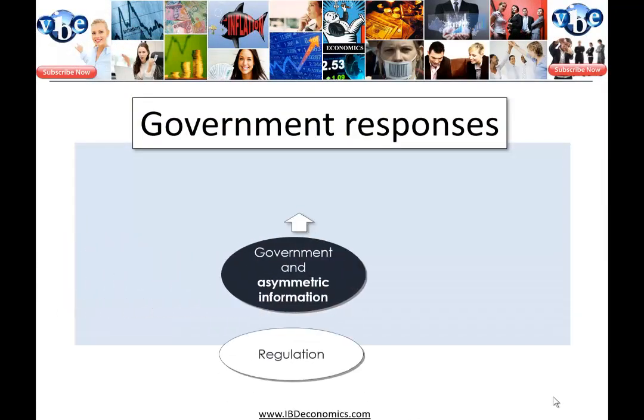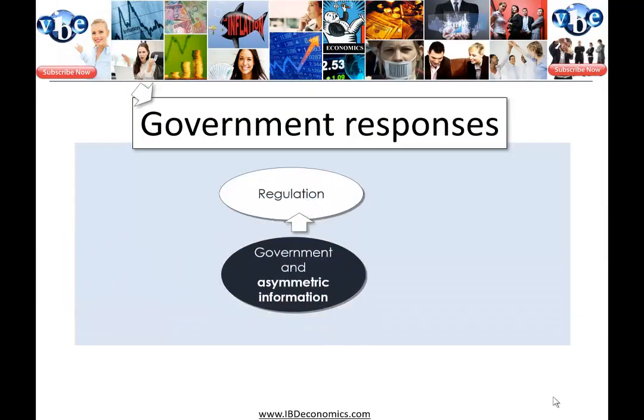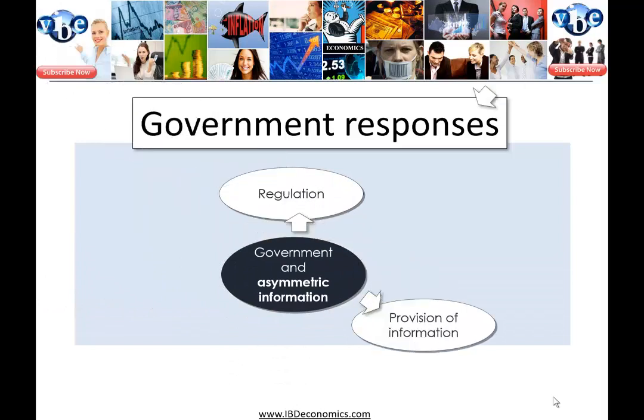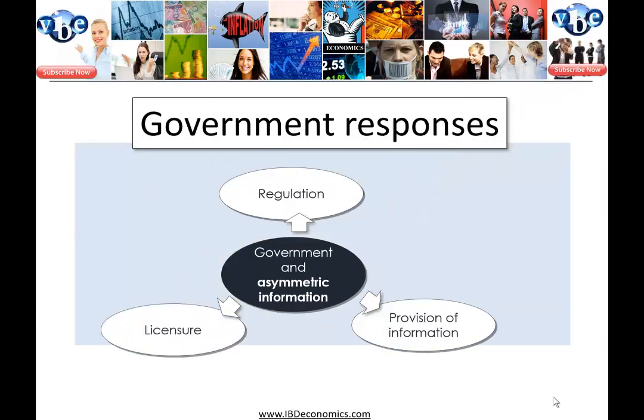What is the government's response to asymmetric information? Regulation, provision of information, and licensure are the three standard responses.